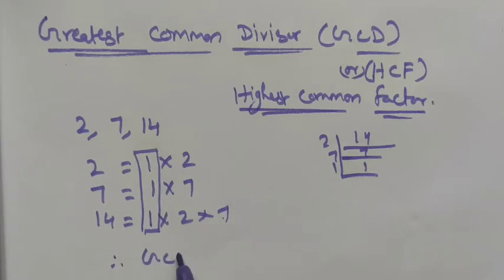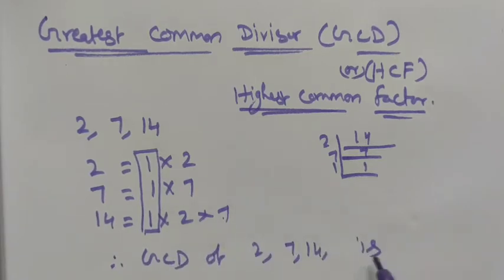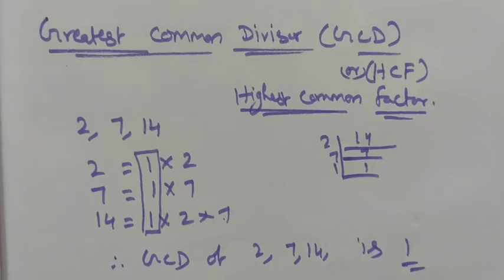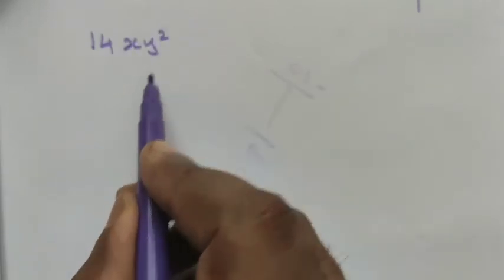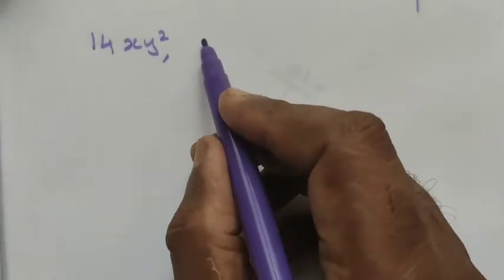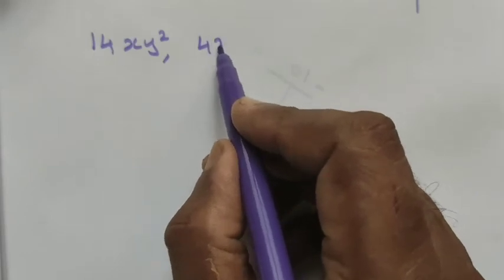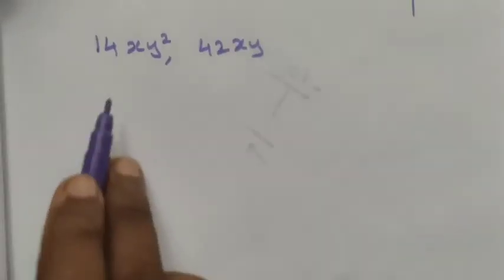Therefore, the GCD of 2, 7, and 14 is 1. In the same way, we are going to solve this using algebra. Using algebraic expressions including variables, let us see — for example, let me take 14xy² as one expression and 42xy as another expression.